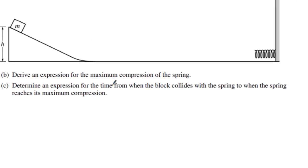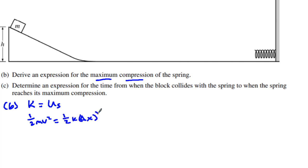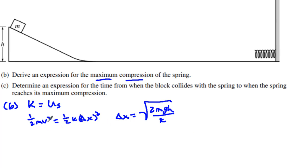We're going to derive an expression for the maximum compression of the spring, which means we go from kinetic energy to spring potential energy. We have one-half MV squared equals one-half K delta x squared, and that delta x is the maximum compression of the spring. After a little algebra, delta x equals the square root of 2MGH over K. You could use V squared but we substitute from A1. That is worth one point.